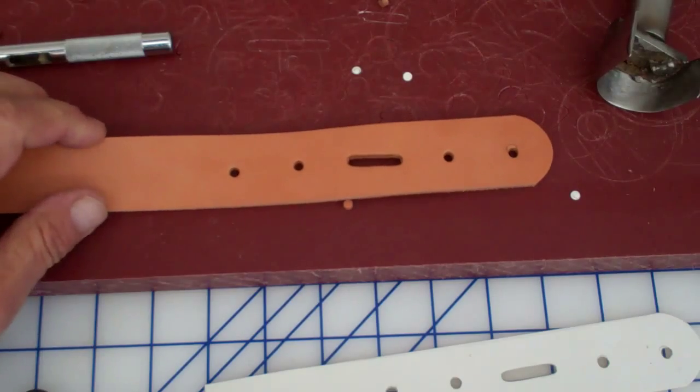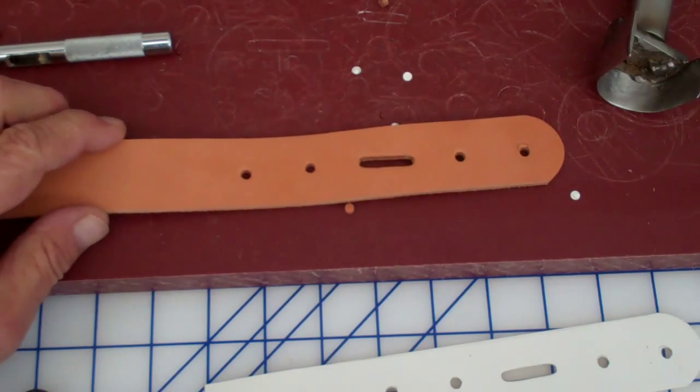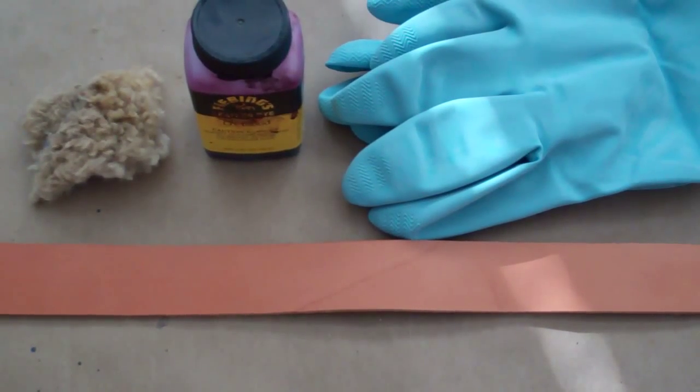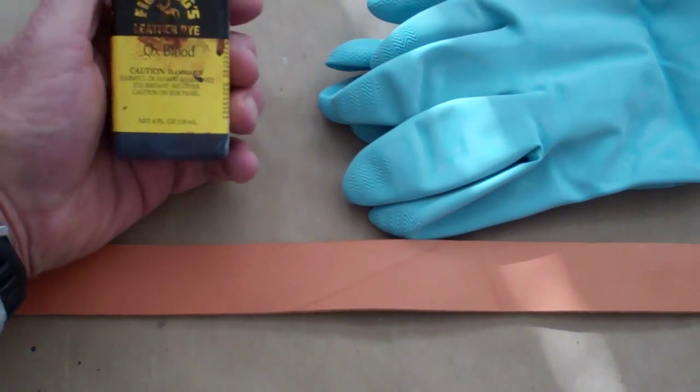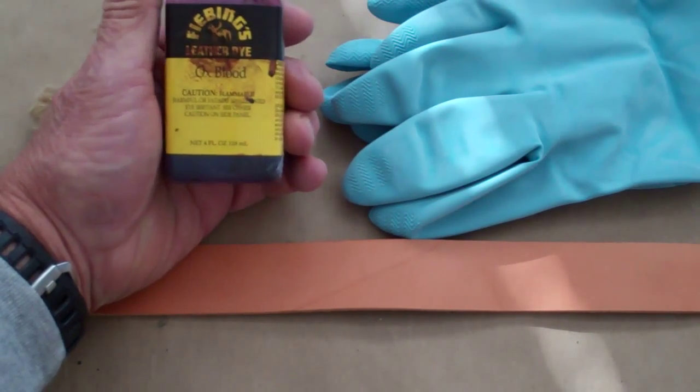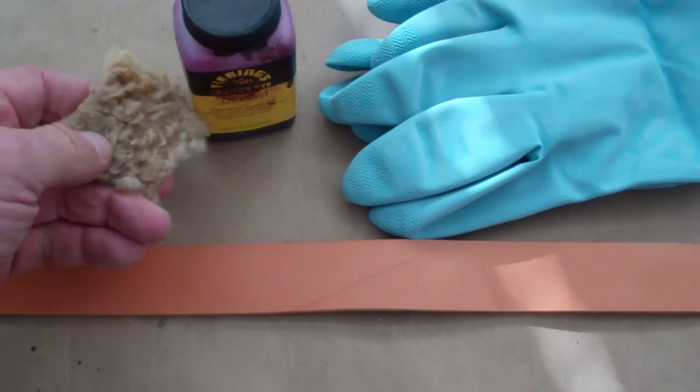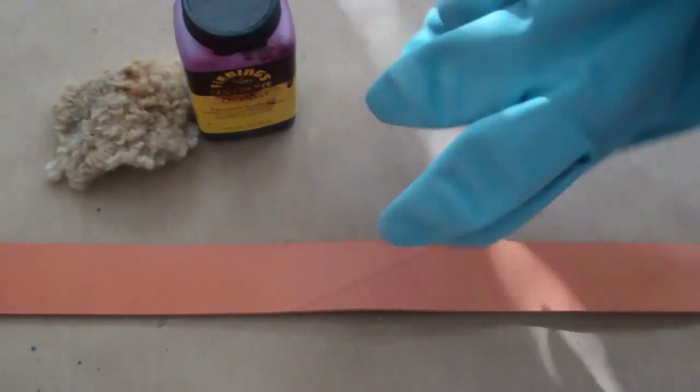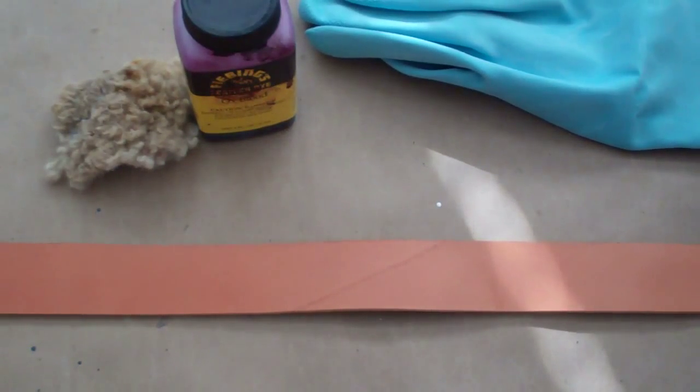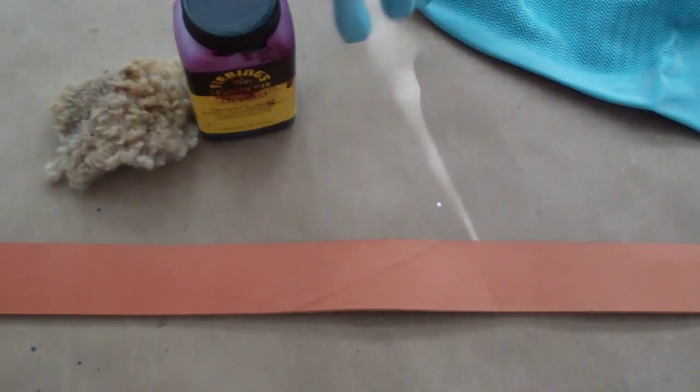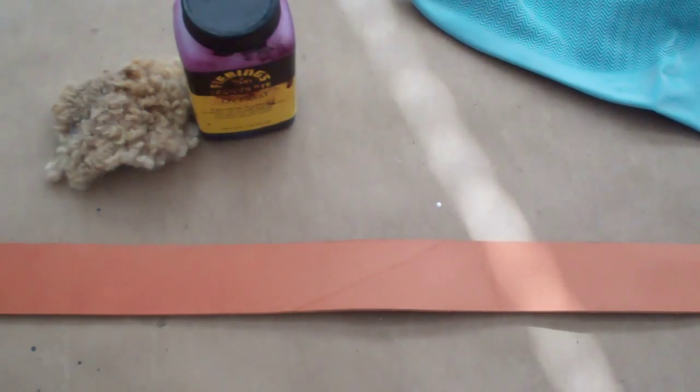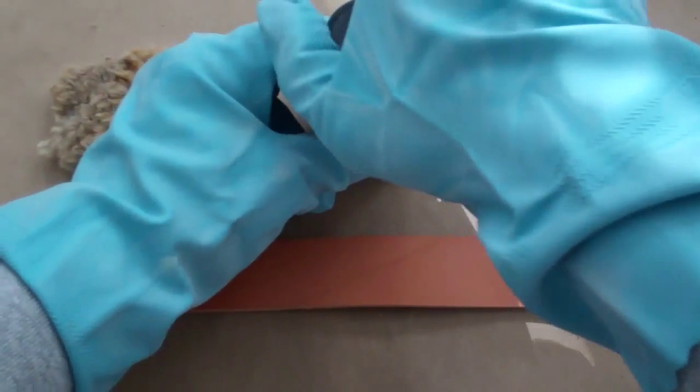Now we'll take this over to the dyeing table and put a nice color on it. We're at my dyeing table and for this color I'm going to use an oxblood. It's a leather dye with a little red for Christmas. I'm going to use a little wool pad and also rubber gloves to keep from dyeing your fingers. Let's begin to dye.